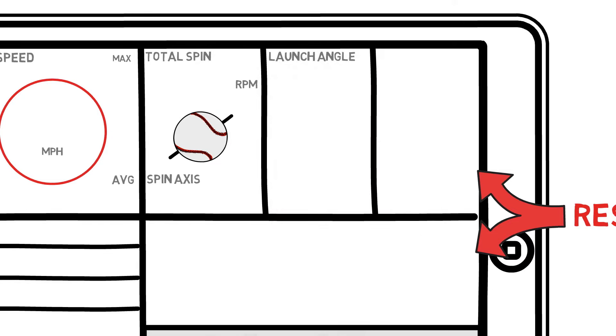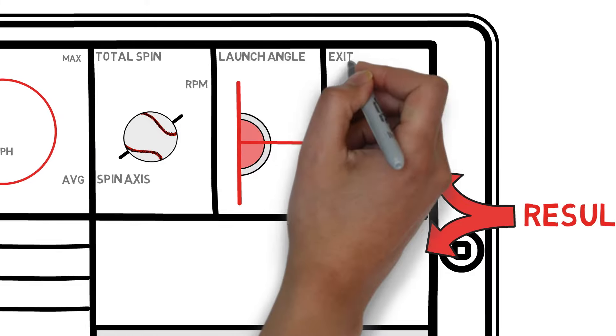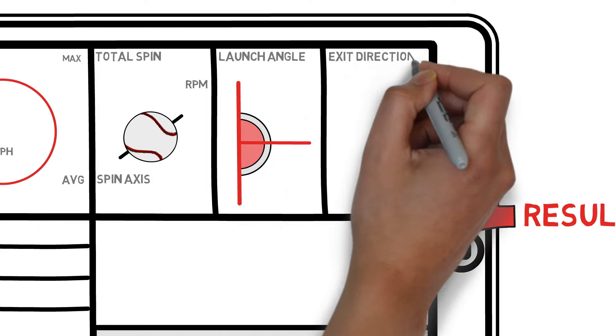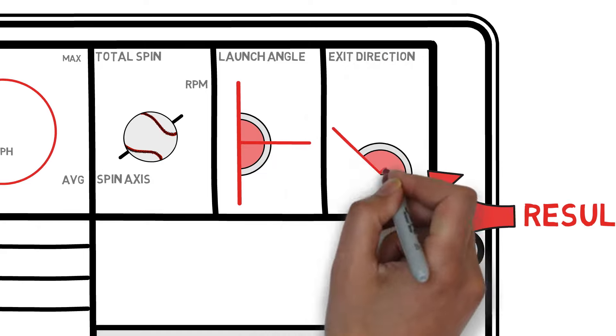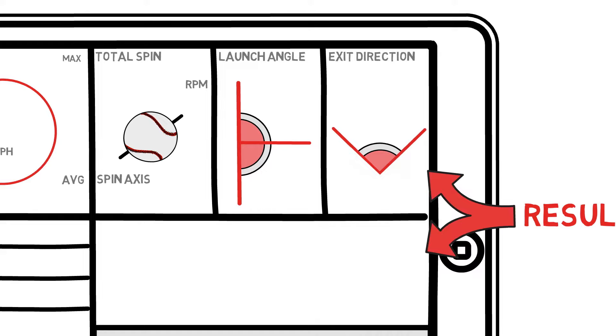Then on our far right, we have our launch angle tabs. The first tab shows your vertical launch angle, the one most of us are familiar with, and in the last tab on the right, you'll see your exit direction, which is what TrackMan labels horizontal launch angle, which shows you where each ball goes in the field directionally, left and right, from home plate.